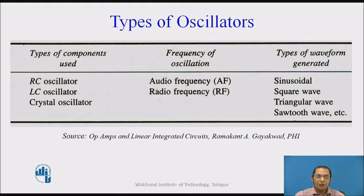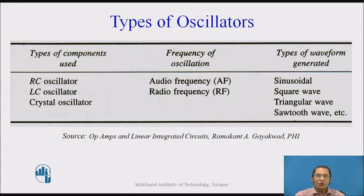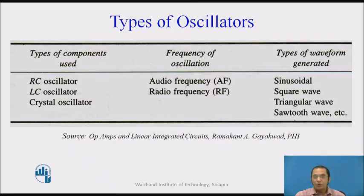Based upon the components used, there are three types of oscillators: those which use RC (resistor and capacitor), LC (inductor and capacitor), and crystal oscillators. Based on the type of waveform generated, oscillators can produce sinusoidal, square wave, triangular wave, sawtooth wave, or any other repeated waveform.